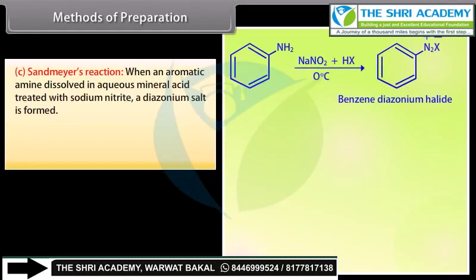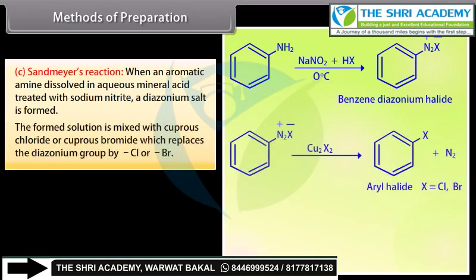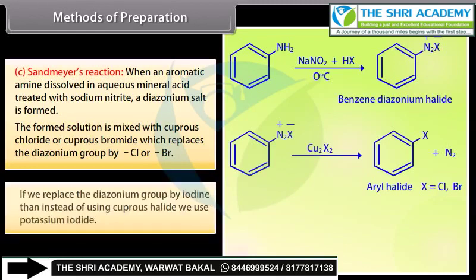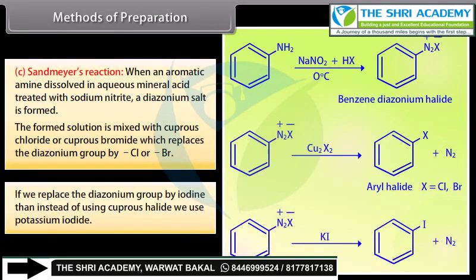Sandmeyer's reaction: when an aromatic amine dissolved in aqueous mineral acid is treated with sodium nitrate, a diazonium salt is formed. The formed solution is mixed with cuprous chloride or cuprous bromide, which replaces the diazonium group with Cl or Br. If we replace the diazonium group with iodine, then instead of using cuprous halide, we use potassium iodide.